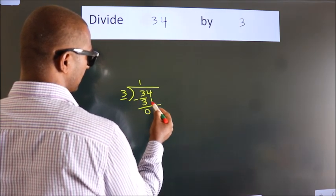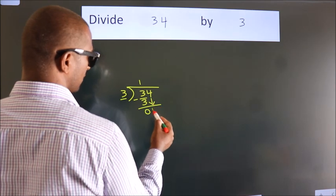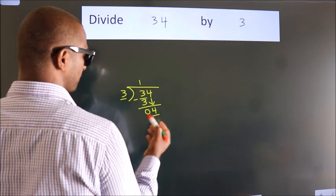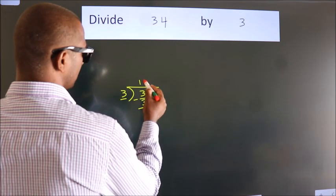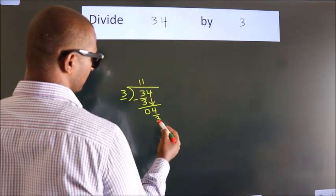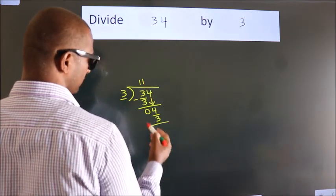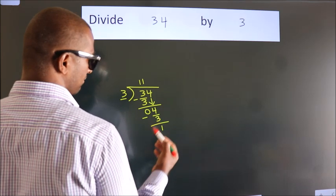After this, bring down the beside number. So 4 down. A number close to 4 in 3 table is 3 once, 3. Now we subtract. We get 1.